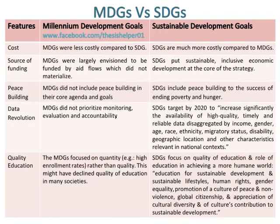MDGs were less costly compared to SDGs, whereas SDGs are much more costly compared to MDGs. Source of funding in MDGs was largely envisioned to be funded by aid flows, which did not materialize. Whereas, source of funding in SDGs puts sustainable, inclusive economic development at the core of the strategy.